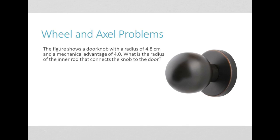In this video, we're going to be doing some wheel and axle practice problems. The figure shows a doorknob with a radius of 4.8 centimeters and a mechanical advantage of 4. What is the radius of the inner rod that connects the knob to the door?